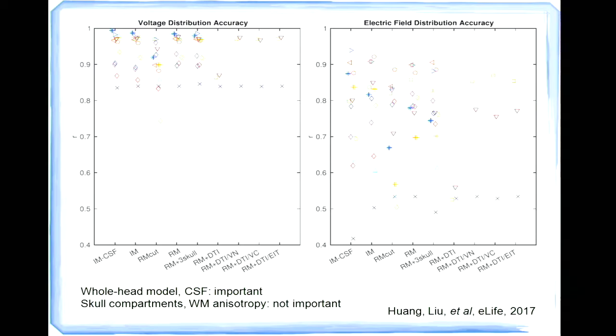And we also built models with a single layer skull. And models with multiple skull layers, including the bone marrow. And we also built models with and without white matter anisotropy. And then we just test different categories of these models using the quality data. And we found it's very important to include CSF and the entire head in your model. But it's actually not that important to model the skull as different layers or including the white matter anisotropy. So this is like a basic guideline for future modeling attempts.